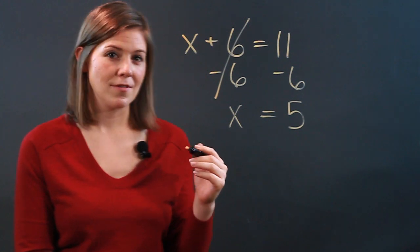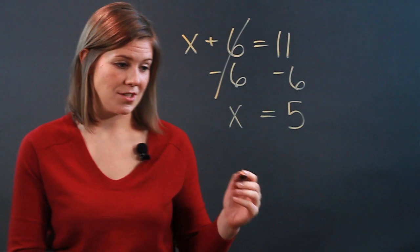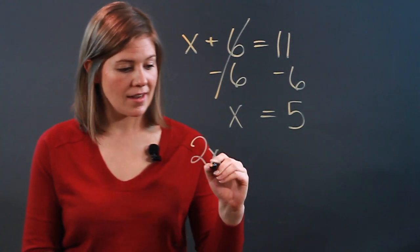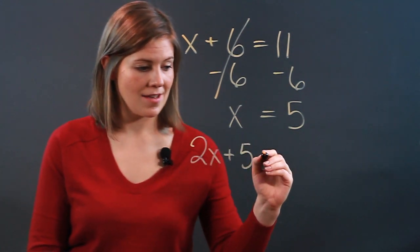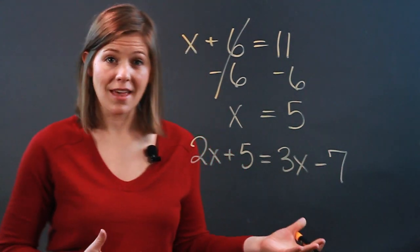You might find that you have the same work to do in a more complicated equation, something like 2x plus 5 equals 3x minus 7. Now, how are you going to deal with that?